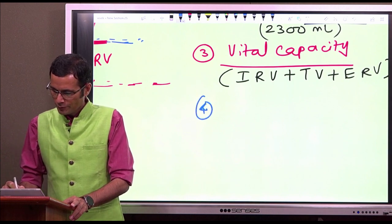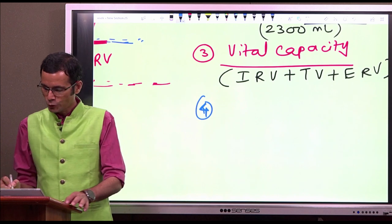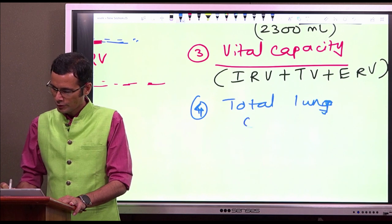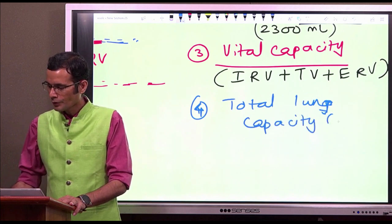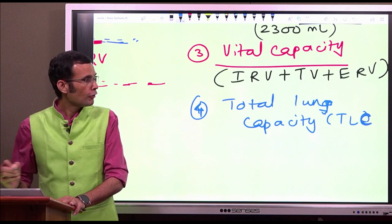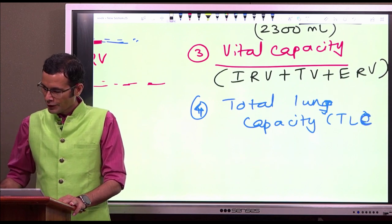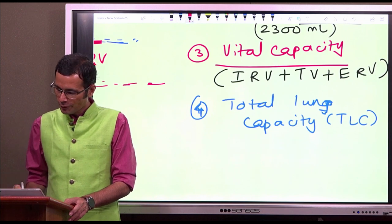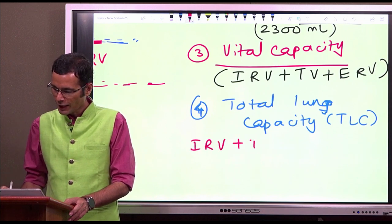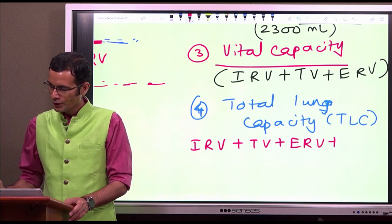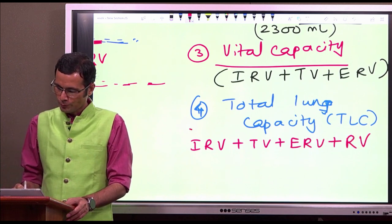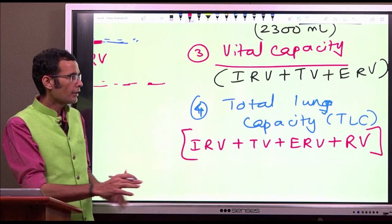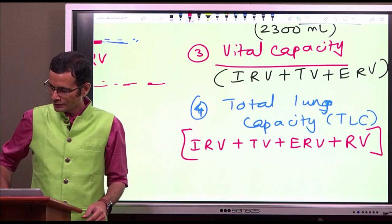The fourth capacity is total lung capacity - the addition of all four volumes. Including all four volumes gives our total lung capacity: inspiratory reserve volume + tidal volume + expiratory reserve volume + residual volume. All four volumes included - that is total lung capacity.